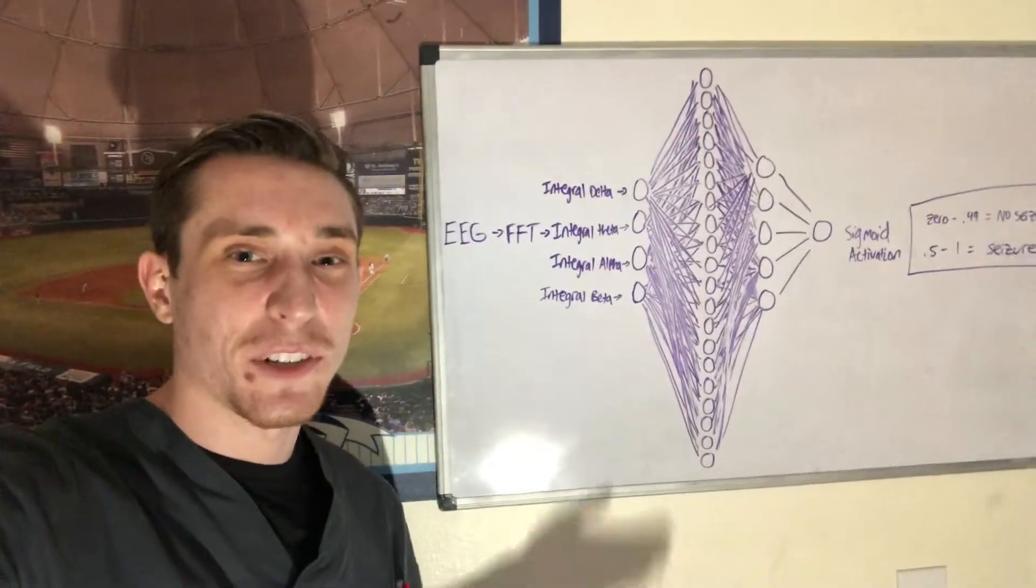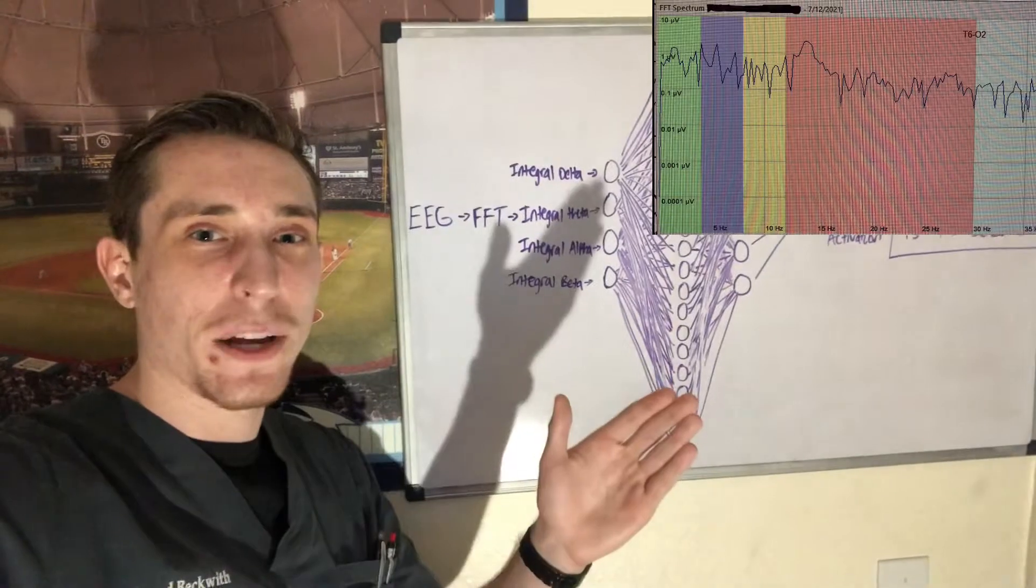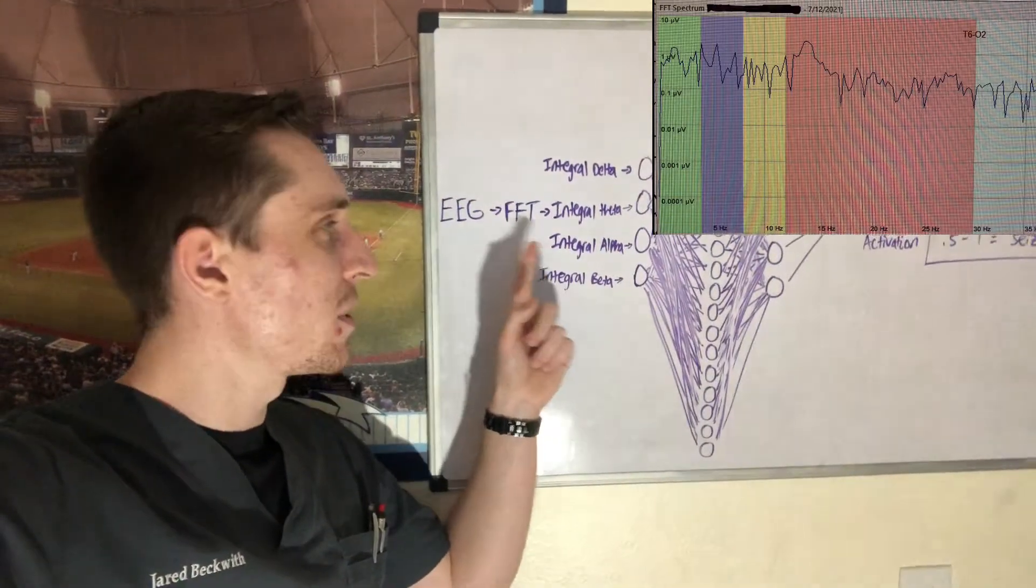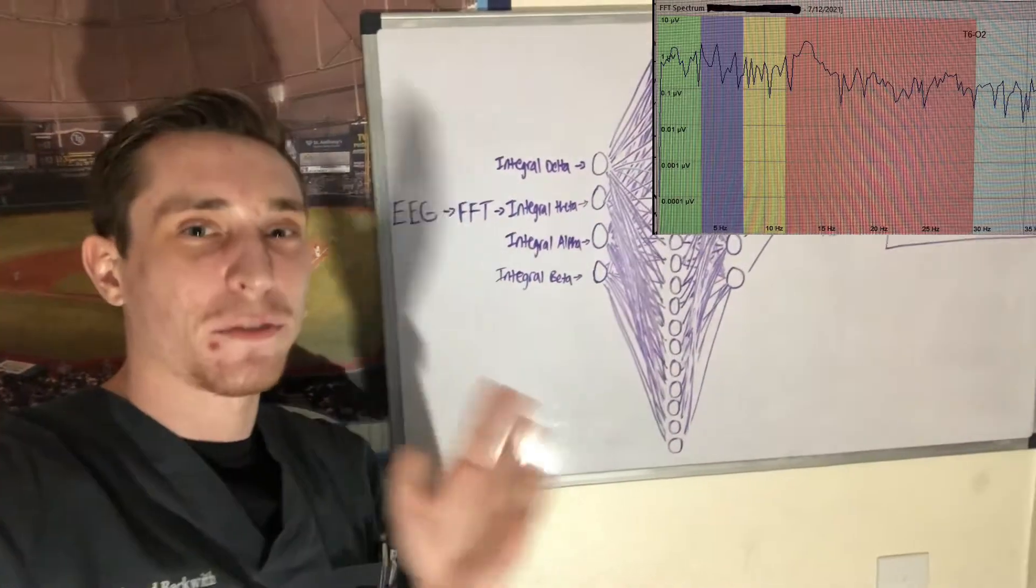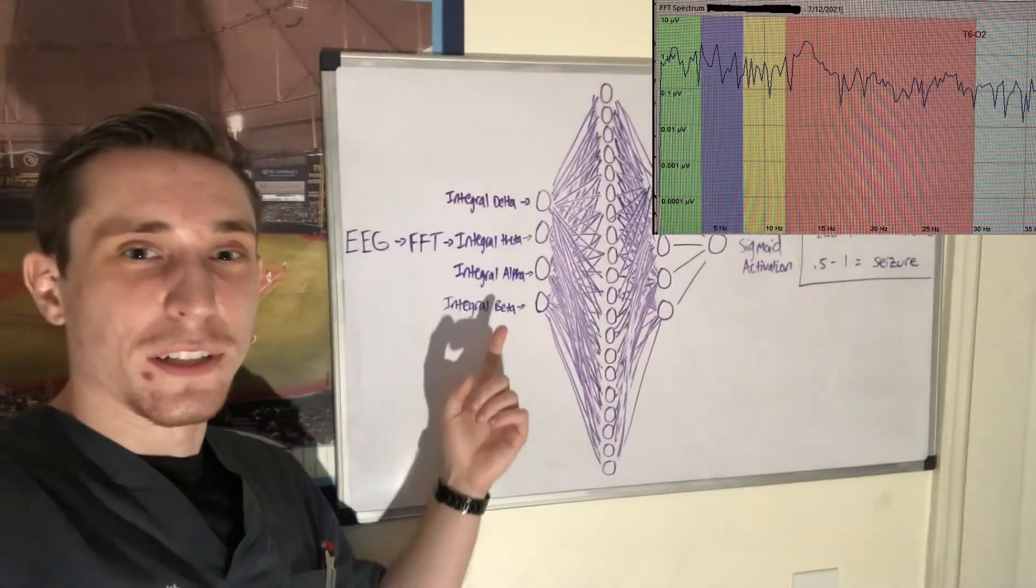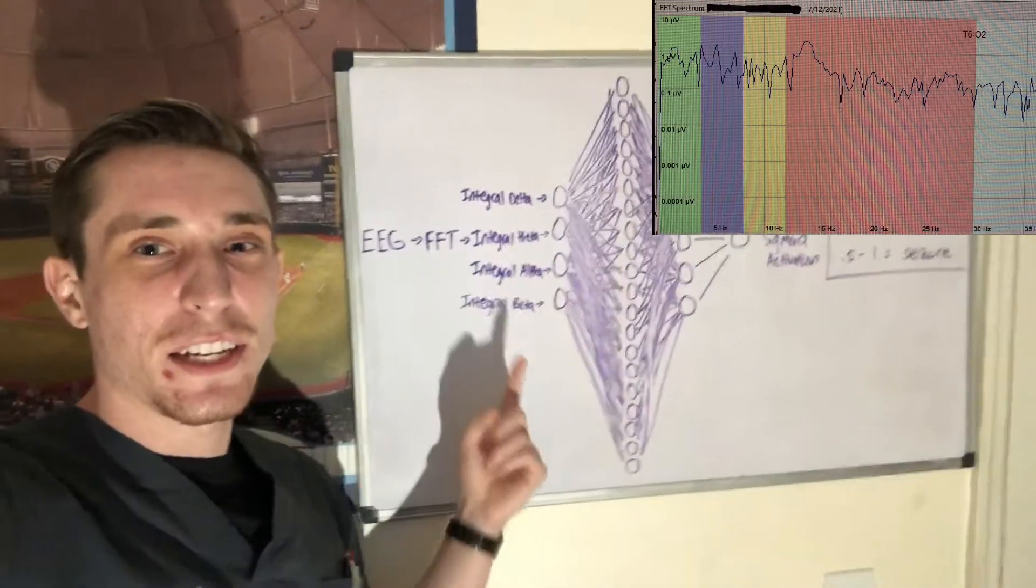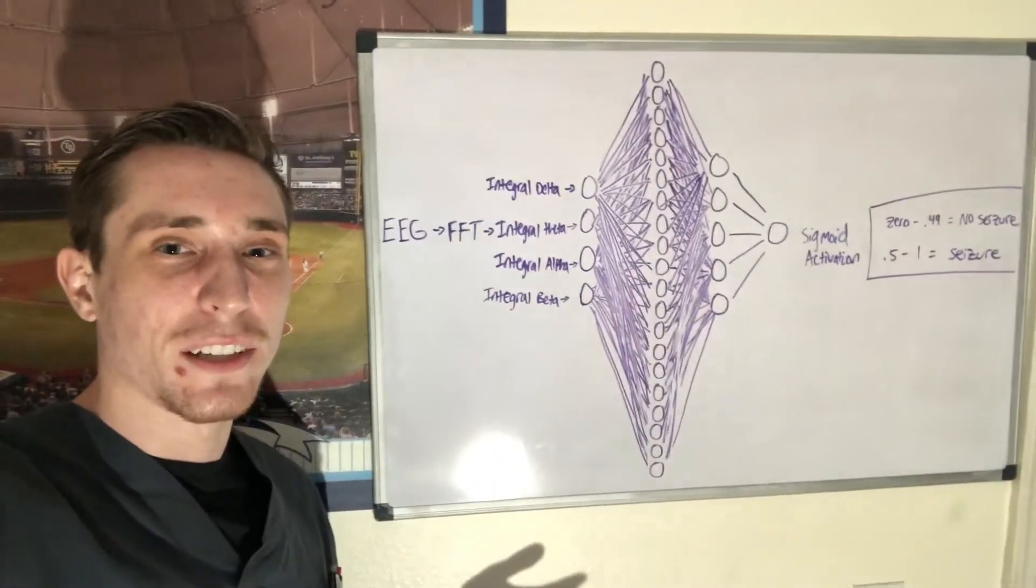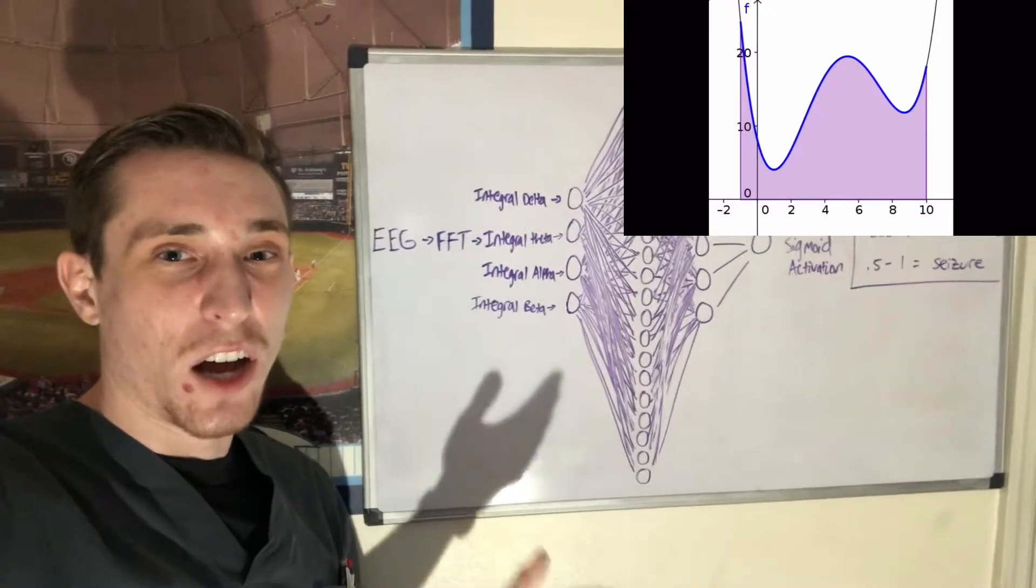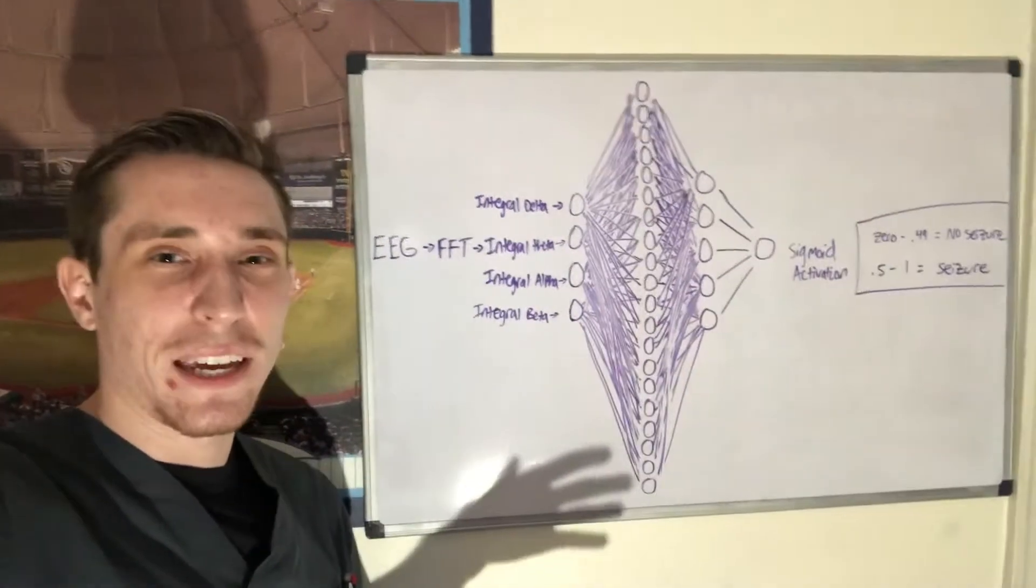So you're going to have all the way on the left your Delta frequency, then you're going to have your theta frequencies, then you're going to have your alpha frequencies, and then you're going to have your beta frequencies all the way on the right. So what do you do with these? Well, you find the area under the curve of the FFT of each of these bandwidths of the EEG signal that you've been looking at. Integral is just the area under the curve of a graph or some data, so don't over complicate it if you're not too experienced in calculus.